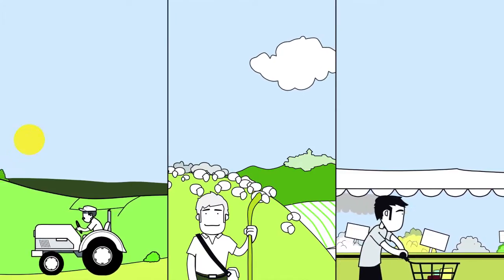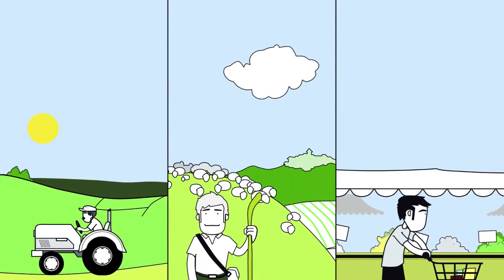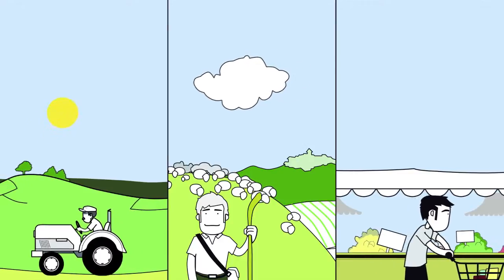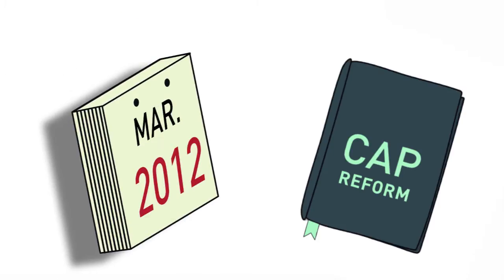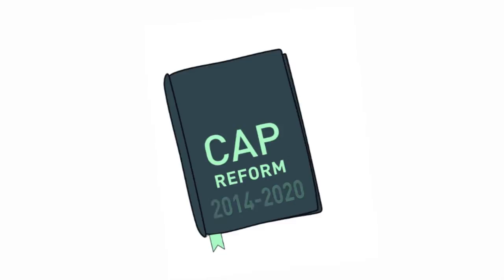The CAP determines what kind of food we produce, how we market it, and what we eat. The discussion about a major reform of the CAP is happening right now and will last until the end of 2013. The reforms will be implemented in the period 2014-2020.